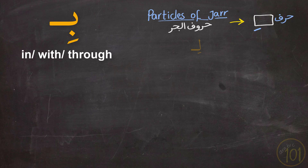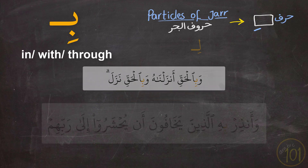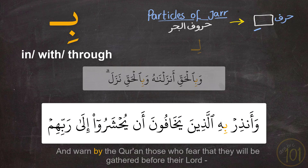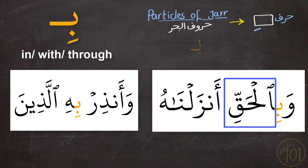The next particle is بِ, which means 'in,' 'with,' or 'through.' We see it used in: وَبِالْحَقِّ أَنزَلْنَاهُ وَبِالْحَقِّ نَزَلَ, and وَأَنذِرْ بِهِ الَّذِينَ يَخَافُونَ أَن يُحْشَرُوا إِلَى رَبِّهِمْ. We notice right away that this particle can be attached to nouns — like الْحَقِّ giving بِالْحَقِّ — but it can also be attached to pronouns, in this case the هَ pronoun, giving بِهِ.